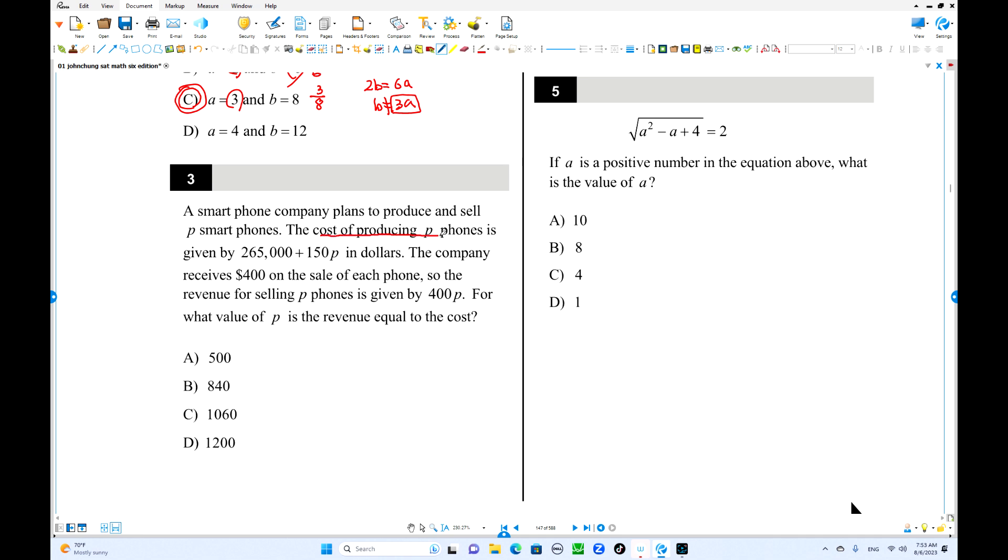The number 3. The cost of producing P phones, this is your cost. Decide this way. When you produce P phones, it will cost this much. But the company receives $400 on sale each phone. The total income is how much? 400 times P, right? P phones.